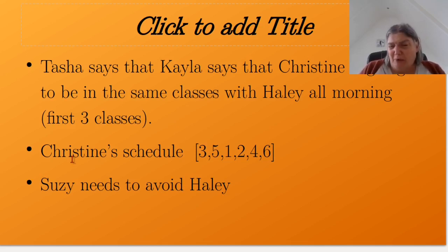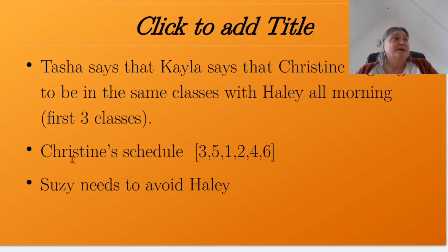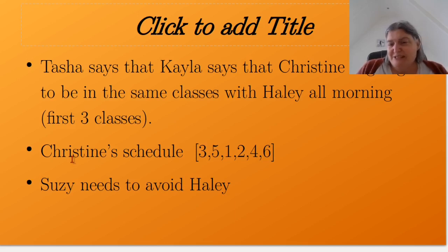It turns out we can do a bit more. What do we know about Haley's schedule? We know it's three, five, one — but then we know the other three classes must be two, four, and six in some order. So why don't we avoid the entire set two, four, and six for all of the afternoon? Which is the same as constraining two, four, and six to be the morning classes.